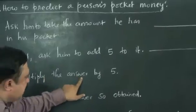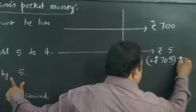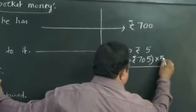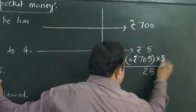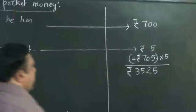Now let him multiply this answer by 5. So he is going to multiply by 5. That is, 5 times 5 is 25 and 5 times 7 is 35, so he would say 3525.